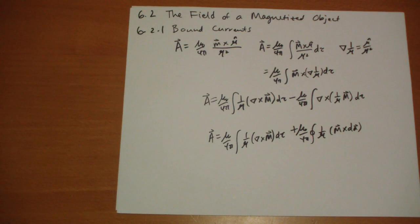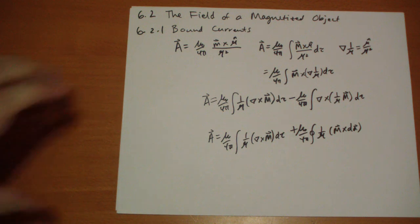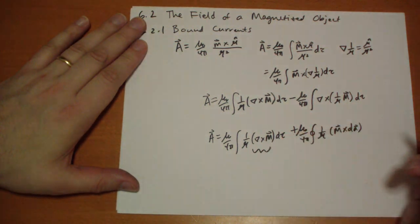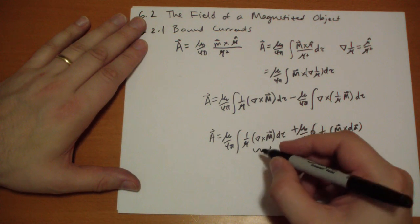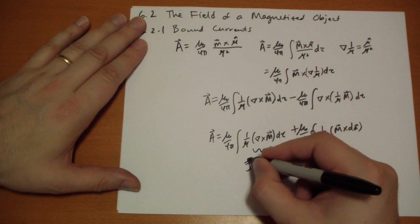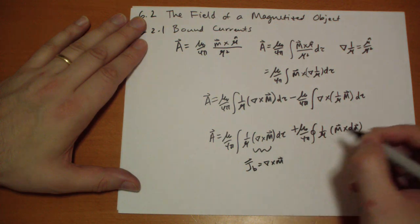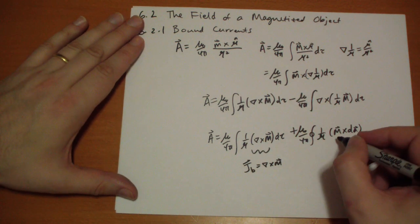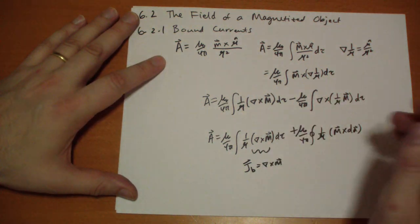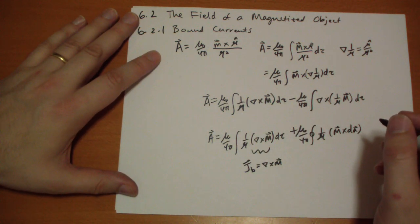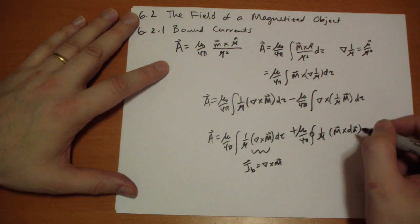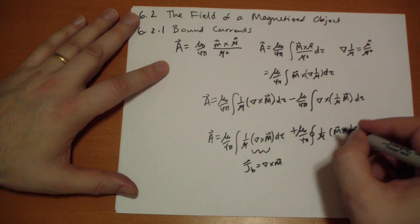Alright. So, what does this first thing look like? Well, the curl of a magnetic field is the current. So, we have this rule that the bound current is equal to the curl of the magnetic field. And then, this one, m cross d-a, that looks like a surface potential. Right?